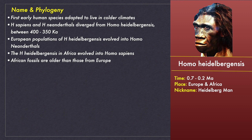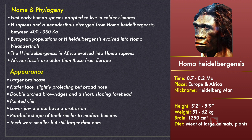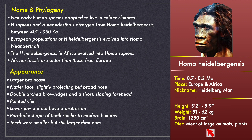Homo heidelbergensis fossils were first discovered in Heidelberg, Germany, and hence the species was named Homo heidelbergensis. They also lived in Africa, with the African fossils being older. They lived between 0.7 and 0.2 million years ago. They were the first early humans to adapt to living in colder climates. Both Homo sapiens and Homo neanderthals diverged from Homo heidelbergensis between 400,000 and 350,000 years ago — the European population evolved into Homo neanderthals and the African population evolved into Homo sapiens. Heidelbergensis had a large brain case of 1,250 cubic centimeters, a flatter face with a slightly projecting but broad nose, sloping forehead and double arched brow ridges. The lower jaw lacked protrusion and they had a pointed chin. Their teeth had a parabolic shape, smaller than earlier species but bigger than ours. Their height and weight was similar to ours, and they ate meat of large animals supplemented with plant-based food.